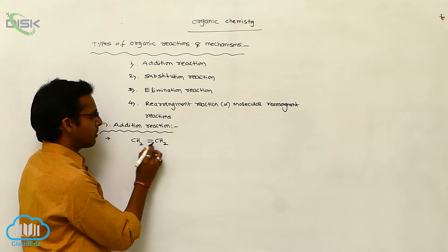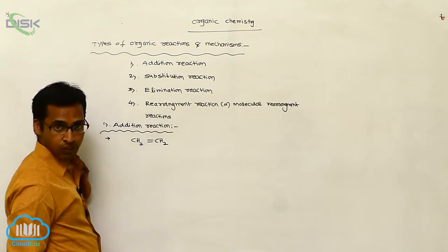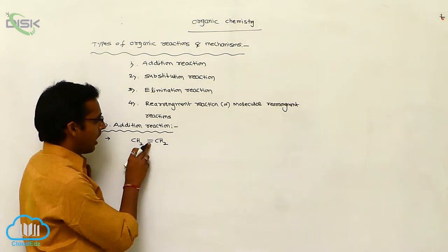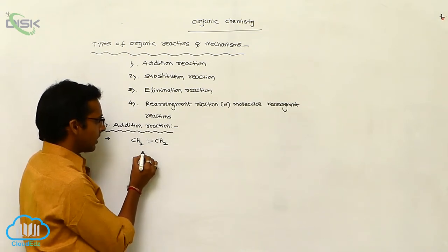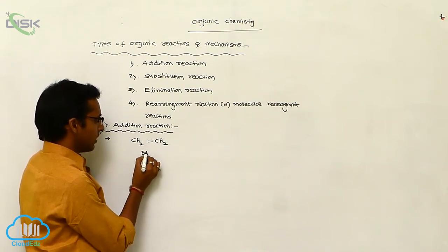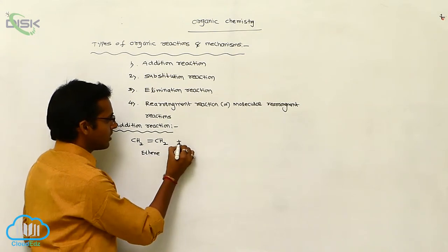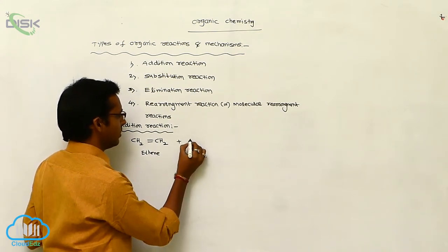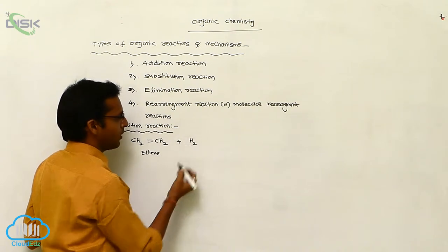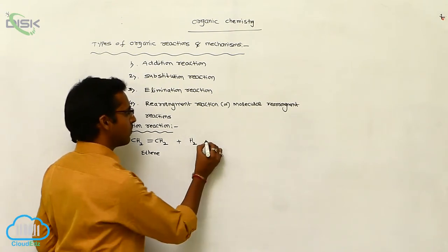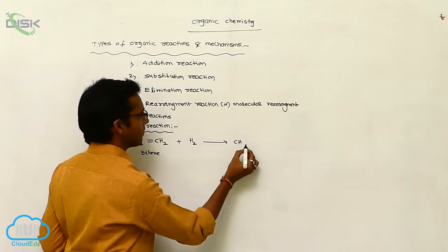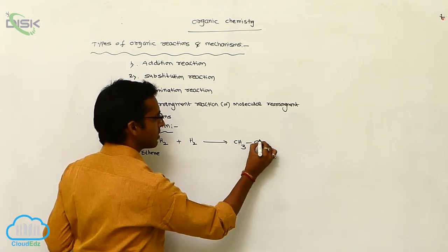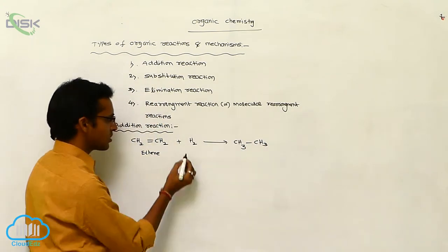For example, consider ethene — two carbon atoms, root word 'eth', with a double bond suffix '-ene'. For this ethene, the addition with H2 molecule causes the double bond to convert to a single bond, giving CH3-CH3.